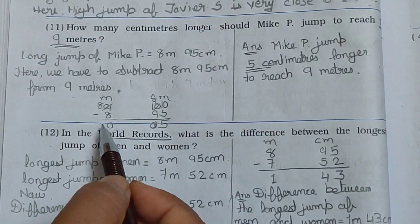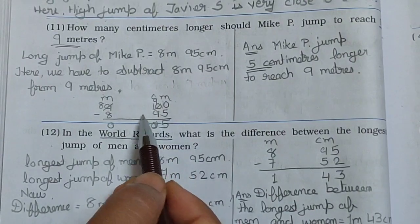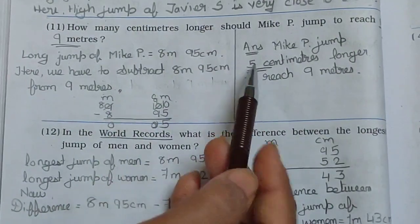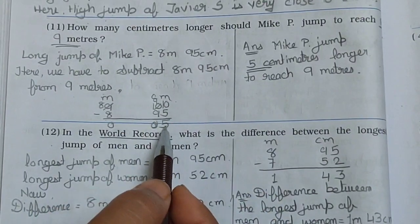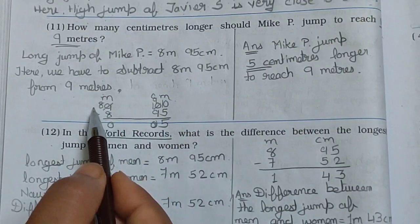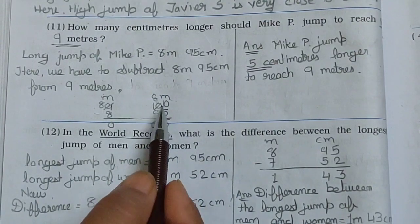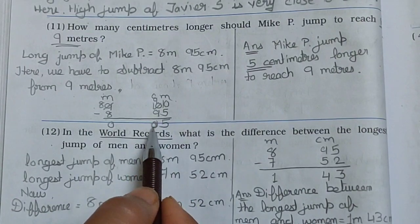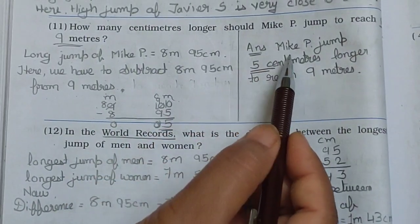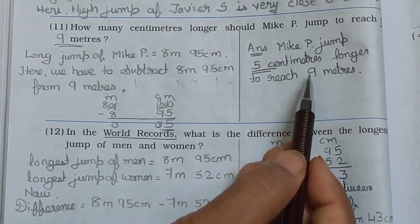See the subtraction here: 9 meter 00 centimeter minus 8 meter 95 centimeter. 0 minus 5 is not possible, so we have to borrow. Here also 0, so we have to borrow from the 9 — 8 comes here, and here come 10s. We give 1 to this side, so here 10 and 9 remaining. 10 minus 5 is 5. 9 minus 9 is 0. 8 minus 8 is 0. So your answer is 5 centimeters. Mike P needs to jump 5 centimeters longer to reach 9 meters.